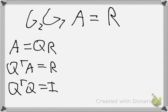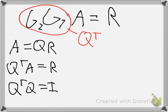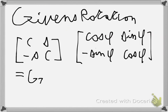All the Givens Rotations that are applied are equal to Q transpose. So if we transpose that, Q will be equal to J1 transpose times J2 transpose, and so on — because when you transpose you flip the order. This is our Givens Rotation in two dimensions.